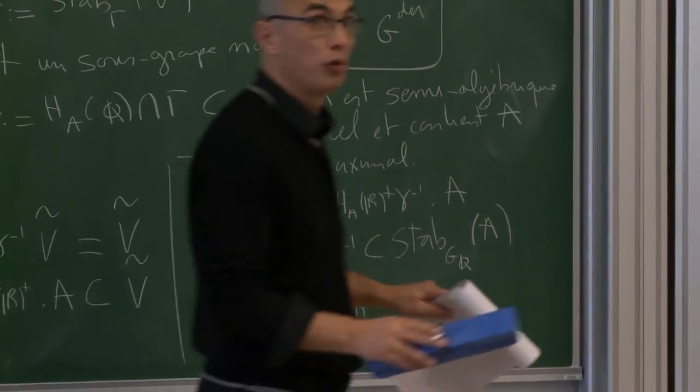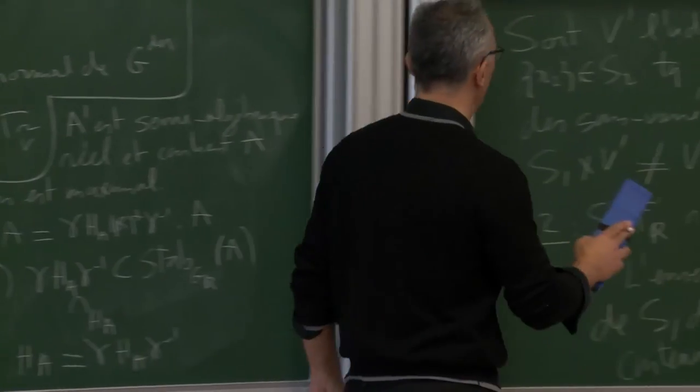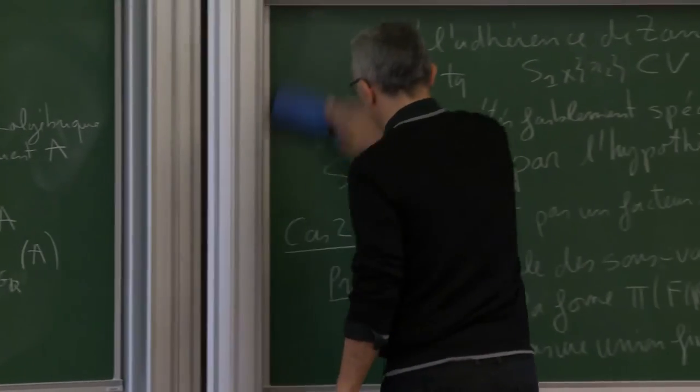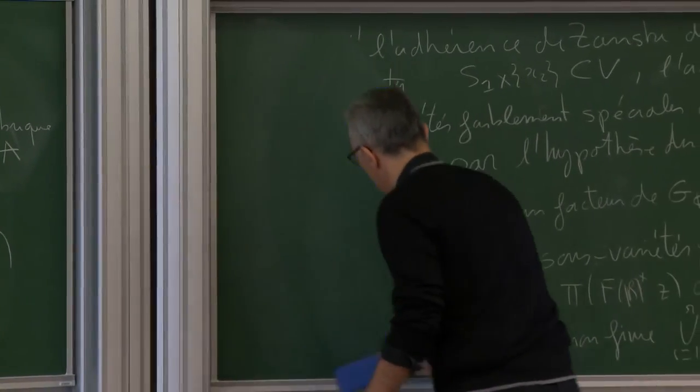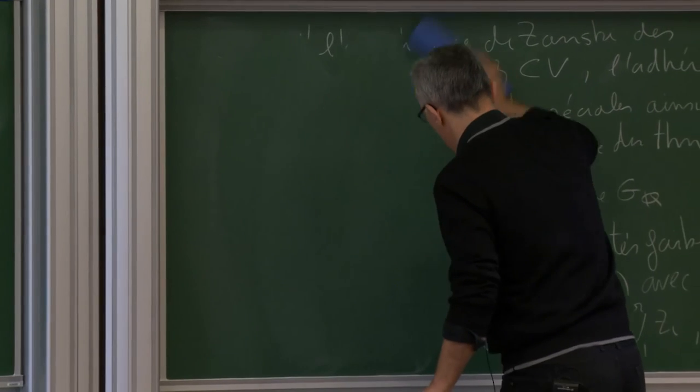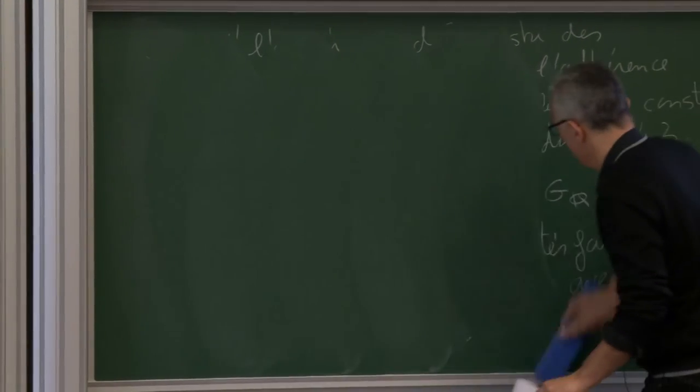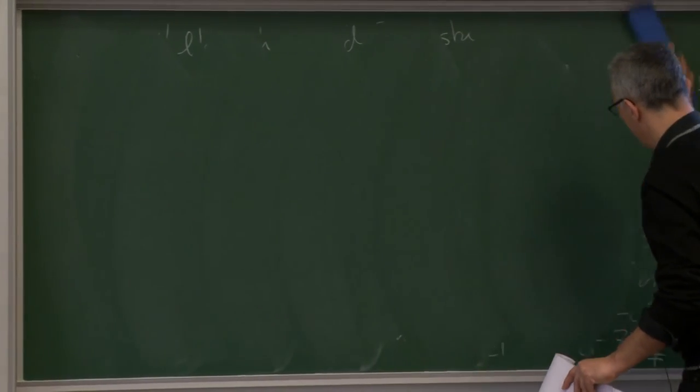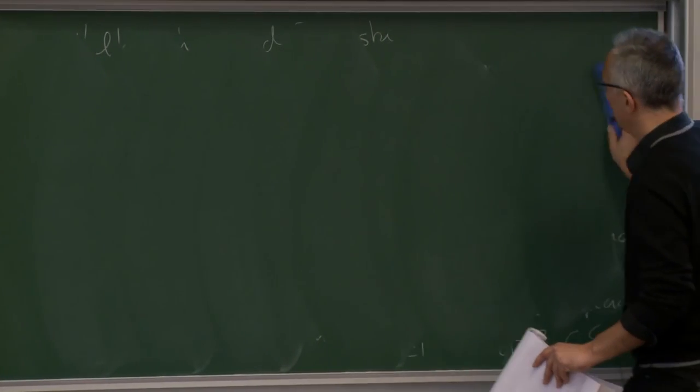Conséquence : H_A est normalisé par Γ_{Ṽ}^{ZAR} qui est un sous-groupe distingué, un facteur de G_ℝ.